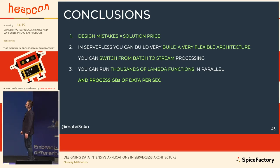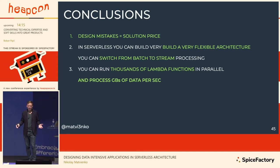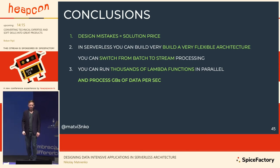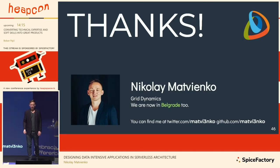Design mistakes have a price. But in serverless, you can build very flexible architecture. You can switch from batch processing to stream processing on the fly — just switch your transport and redo some architecture patterns. You can run thousands of Lambdas in parallel, which is really high-scale and can process gigabytes of data per second. Thank you so much. My name is Nikolaj Matvienko, from Grid Dynamics — an international company with an office in Belgrade.